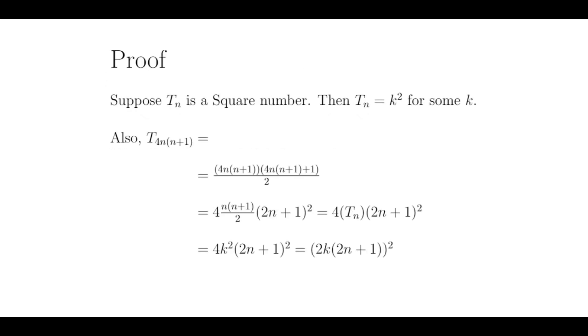To prove this, suppose Tn is square. In other words, Tn is the nth triangular number, and it equals k squared for some k. We also have that Tn is equal to n times n plus 1 divided by 2. This is from before. So plugging in 4n times n plus 1 into our formula and simplifying, we get that T4n times n plus 1 is equal to the square of 2 times k times 2n plus 1. This means it is not only a triangular number, but a square number as well.